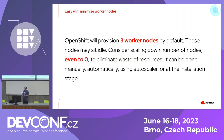The second easy win is to minimize worker nodes. In our use case, you may not need three worker nodes by default as OpenShift provides. You can consider scaling them down to zero if needed, to avoid wasting resources. It can be done manually, automatically with autoscaler, or at the installation stage.